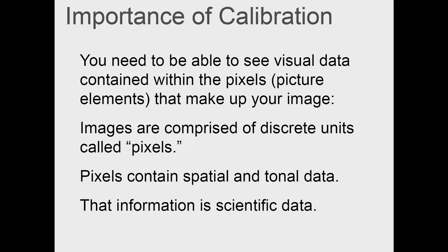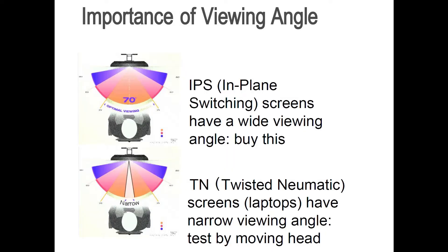It's really important that you see exactly what is in the images. The other piece related to monitors is the importance of the viewing angle. On a laptop, the electronics used are called twisted nematic electronics, which have a very narrow viewing angle. You can test this by moving your head in relation to the screen — as you move your head up and down, the screen darkens. However, if you use an in-plane switching screen, these have a wide viewing angle, which is the kind of screen you need to buy, so that two people evaluating an image both see the same image.